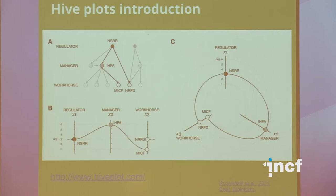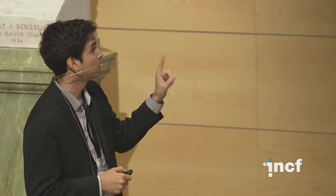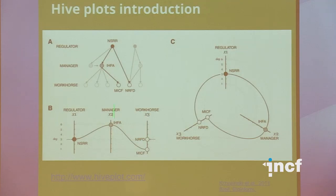For the first axis, we'll put NSRR at position three because it's got three edges coming out — the degree being the number of edges going in or out of a node. IHFA goes up at six because it's got six edges, and MICF down here because it's only got one. That's the first trick of hive plots: you graph based on the degree, then connect them in the same way that the edges are located. The second trick is to engage your spatial reasoning ability. We take those three axes and put them on a radial basis — x1 over here, x2 over here, x3 over here — and connect them together with edges.